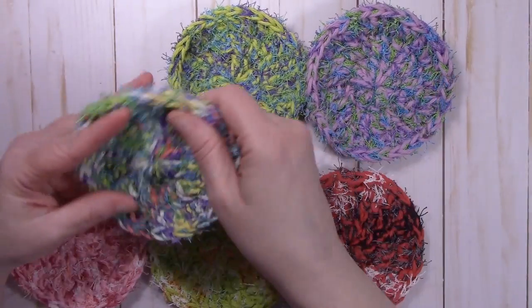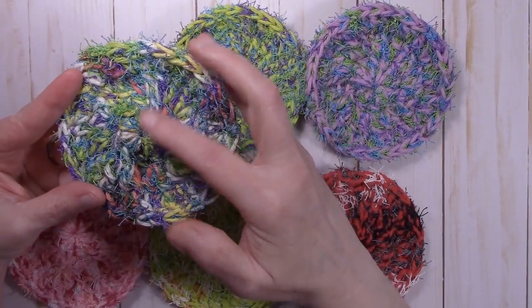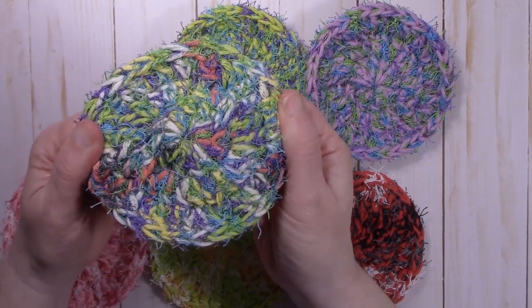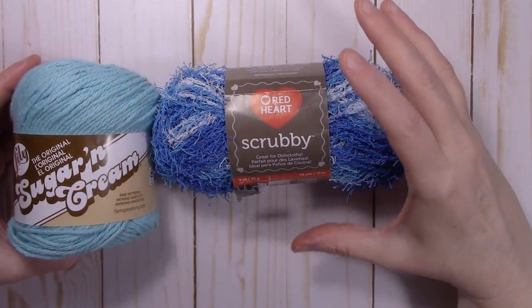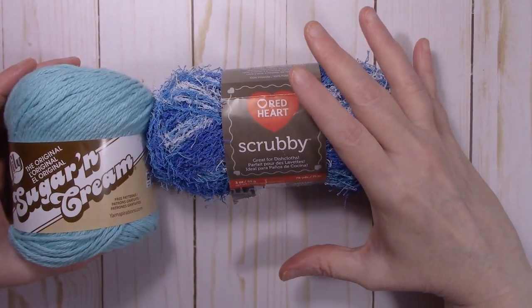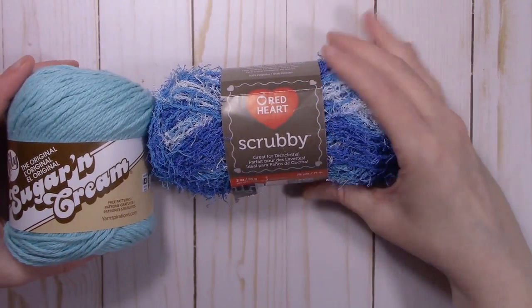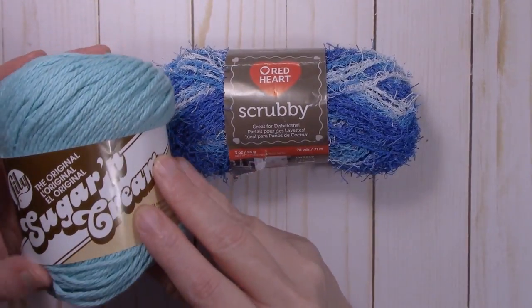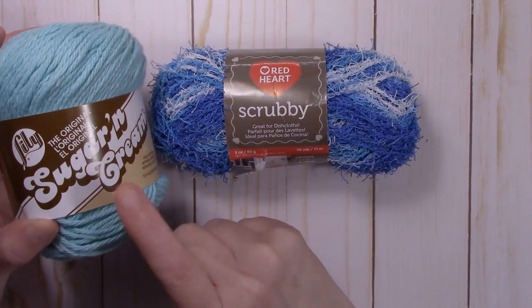So let me drop the camera down and we'll talk about the yarn, the hook, and anything else you might need to work on these dish scrubbies. I use two different kinds of yarn when making my scrubbies. I use Red Heart scrubby yarn and then I use a cotton yarn, in this case, like Lily Sugar and Cream.